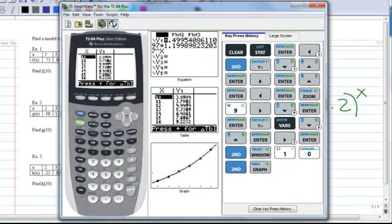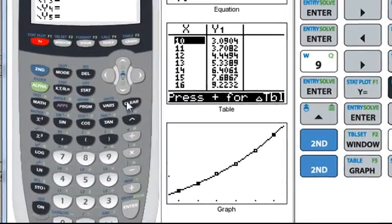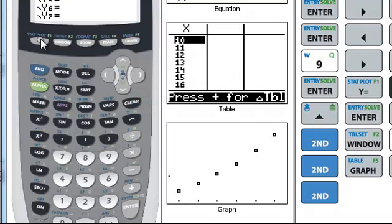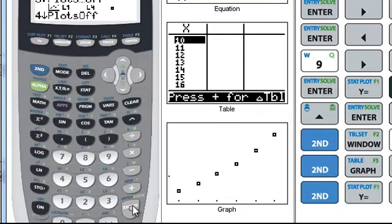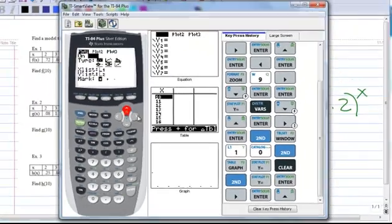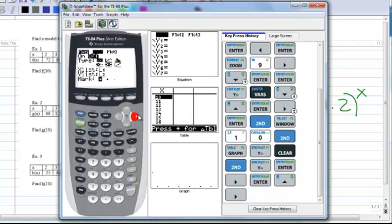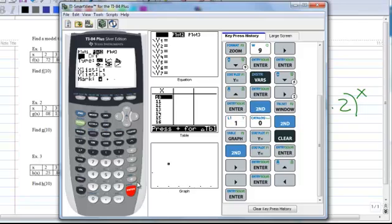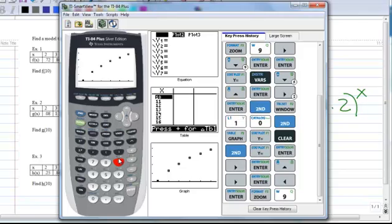Alright, so let's go back to y equals, delete that. Let's go back to our stat plot and turn off stat plot 1. And then I'm going to turn on stat plot 2. Notice I've already got stat plot 2. Stat plot 2, I set to list 1 and list 3 because there's my data: list 1, list 3. So we're going to turn that on and then press zoom 9. And there's my data for example 2. And that looks logarithmic.